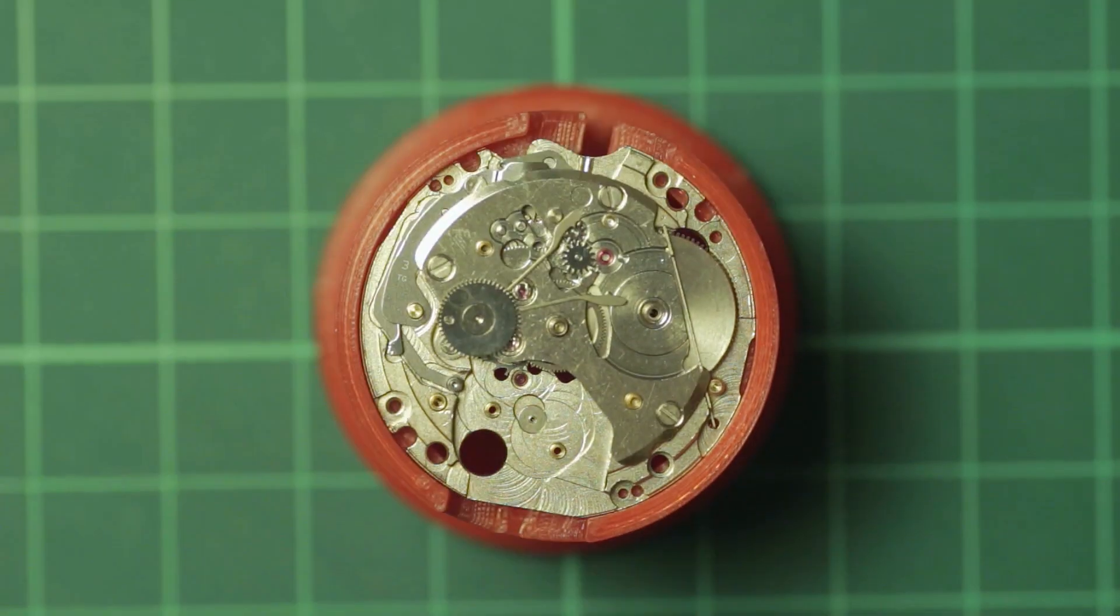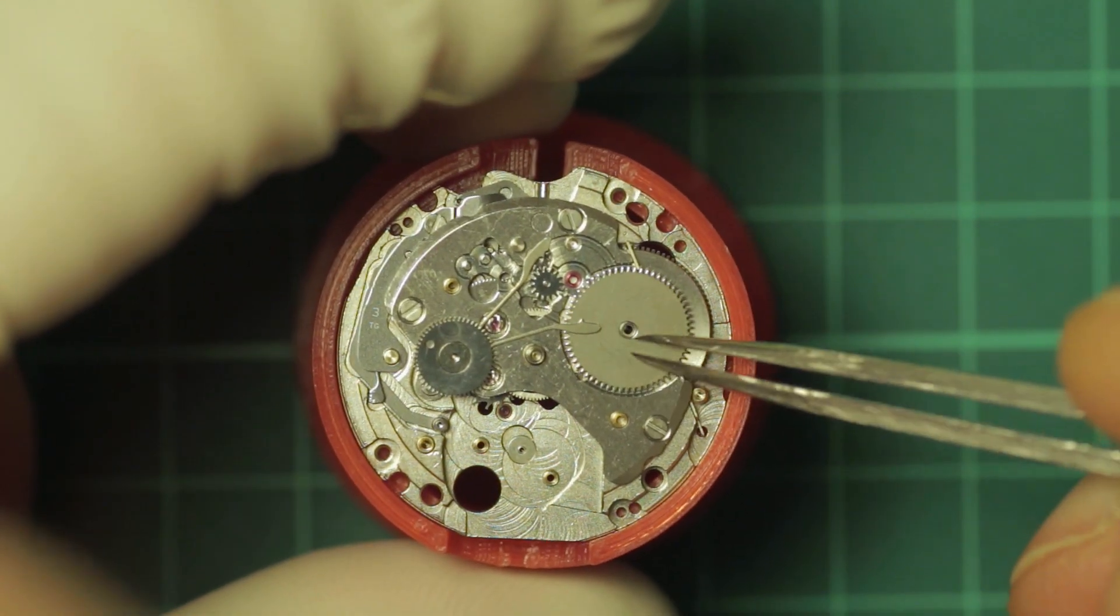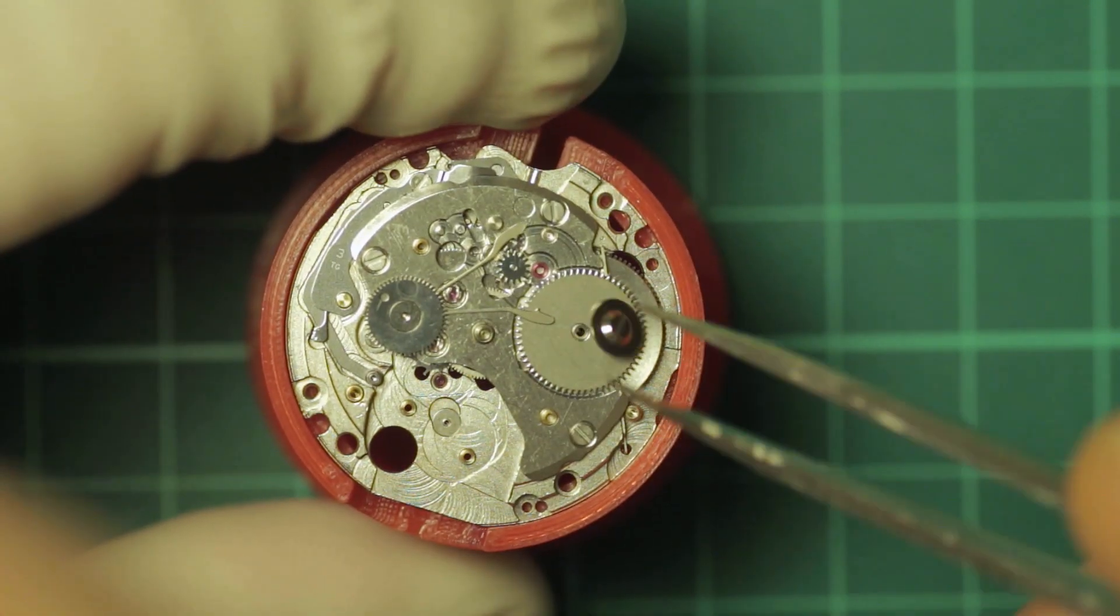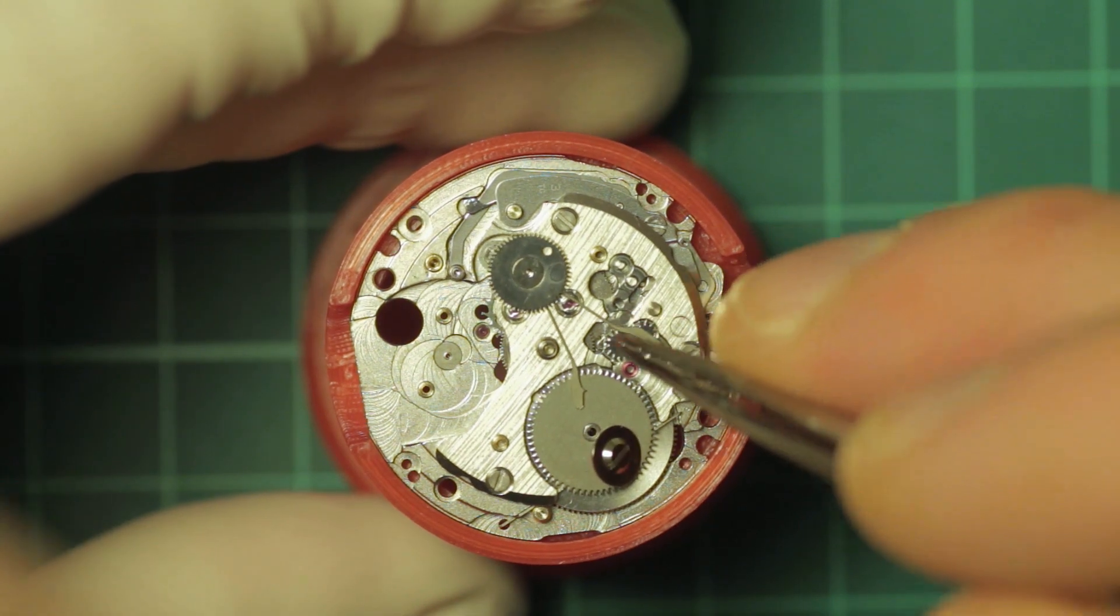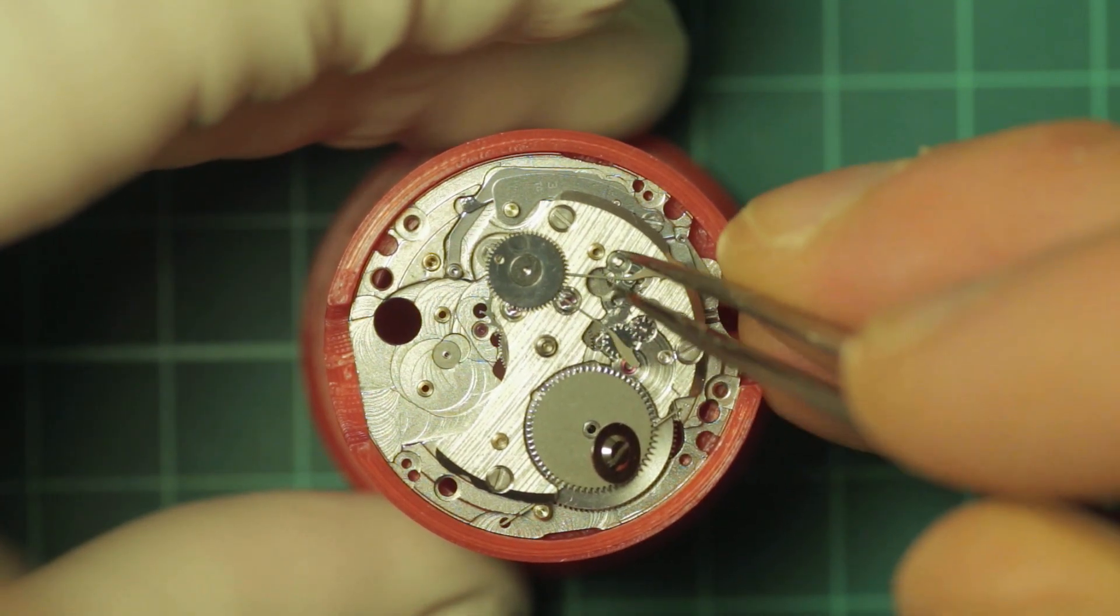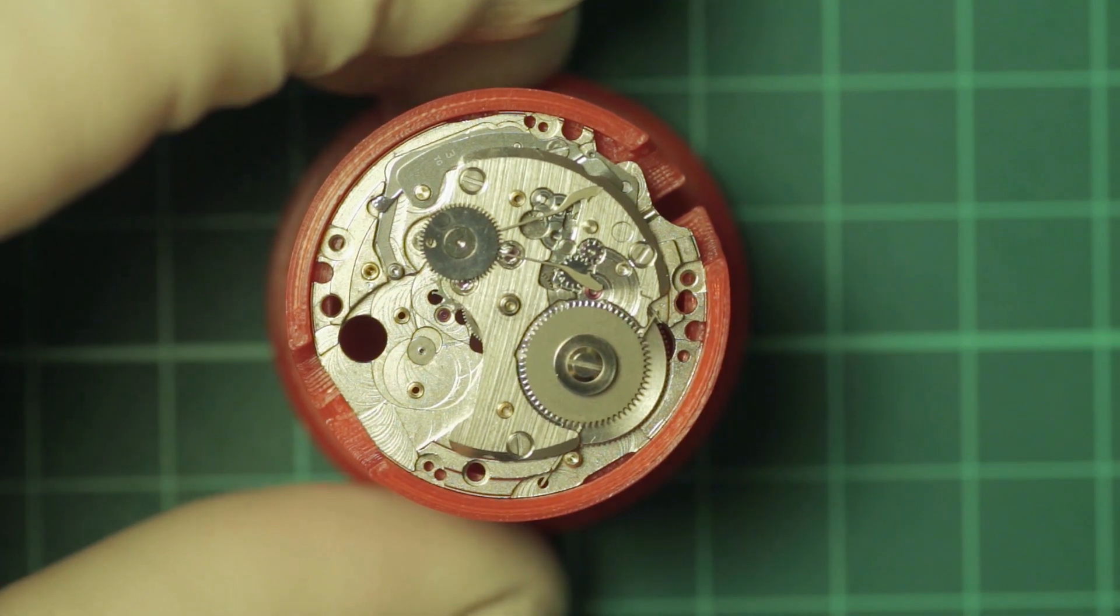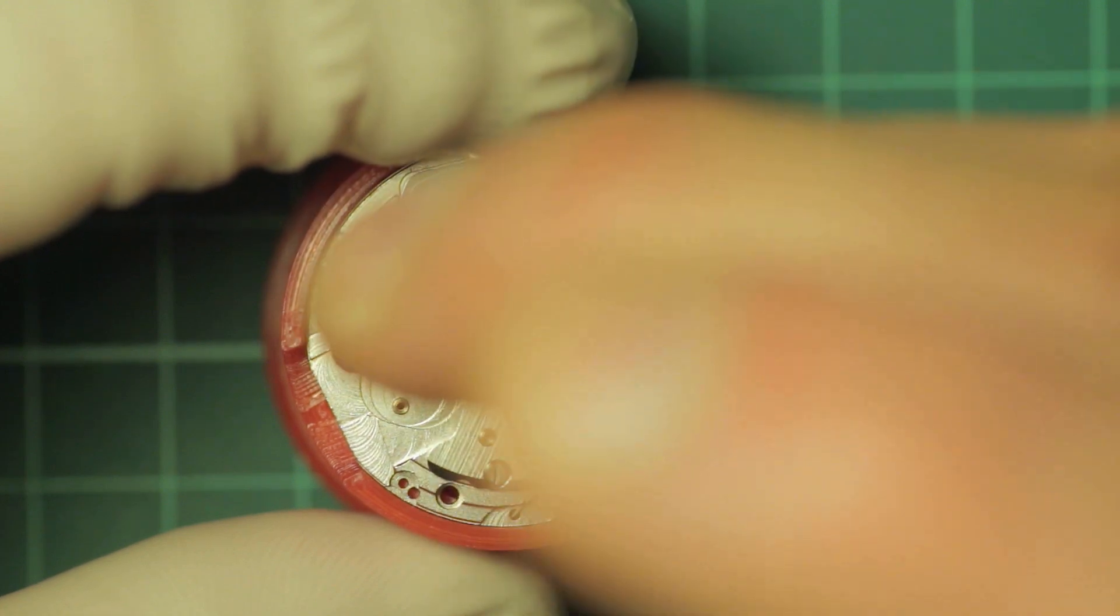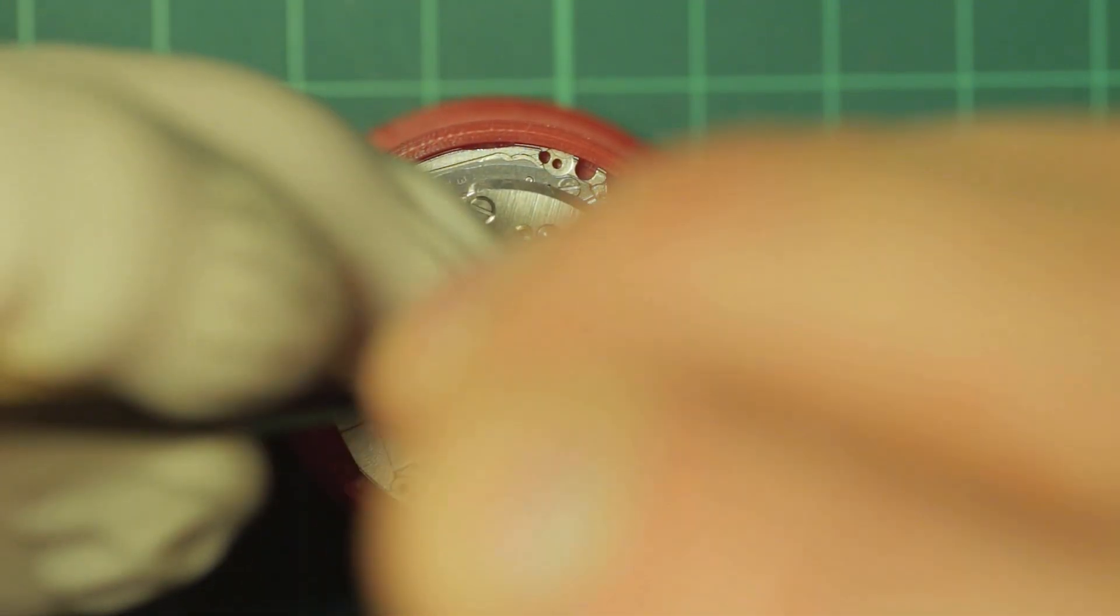The barrel arbor is oiled before refitting the ratchet wheel. And similarly the pole levers are moved out of the way whilst refitting the ratchet wheel screw just to avoid damaging them. And there I'm using my brass tweezers to hold the ratchet wheel in place while I tighten that.